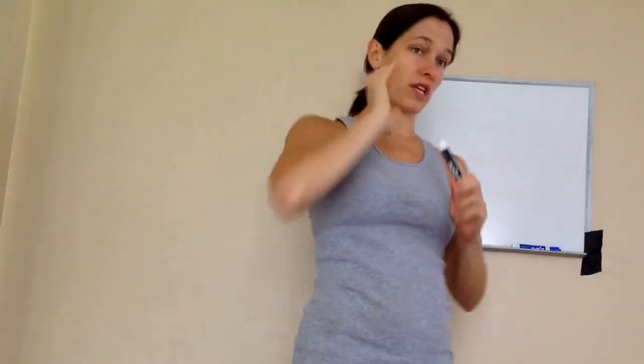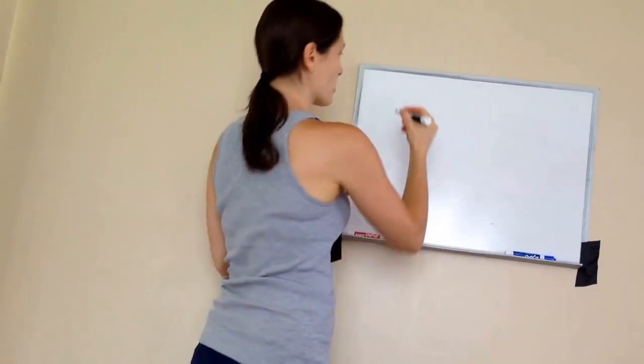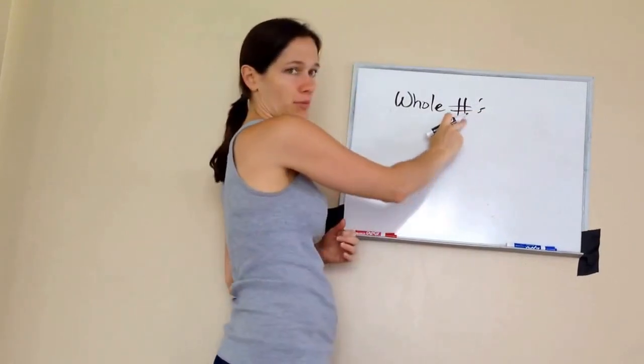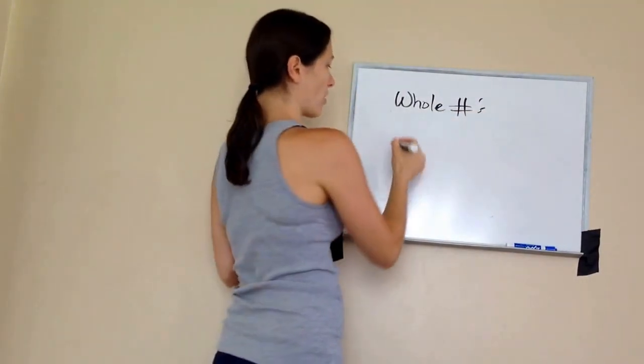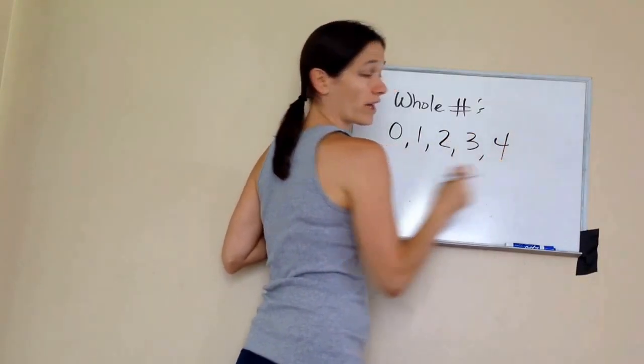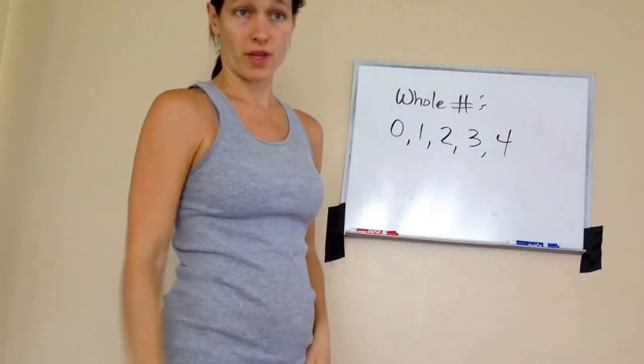Okay, so let's just review this really quickly. There's something we call whole numbers. Whole numbers are zero, one, two, three, four, and it keeps going on almost forever.